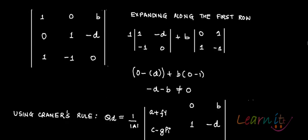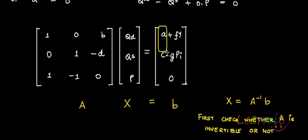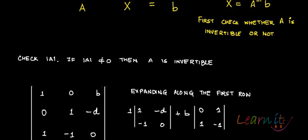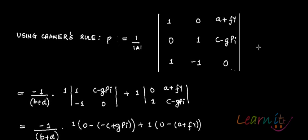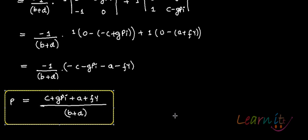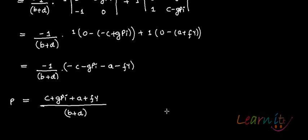For P, we superimpose the exogenous variable column onto the third column of the coefficient matrix. Expanding along the first column and applying 1 over determinant A, we get P equals (C minus GPI plus A plus FY) divided by B plus D. The signs of these solutions will be analyzed further when we discuss the implicit function theorem and when we look at derivatives.